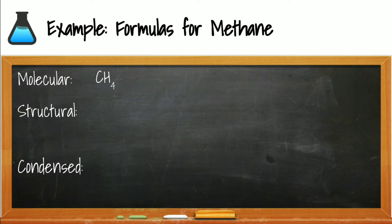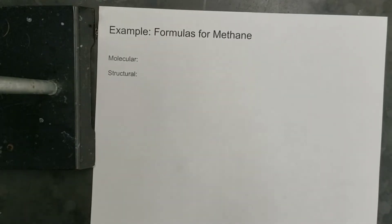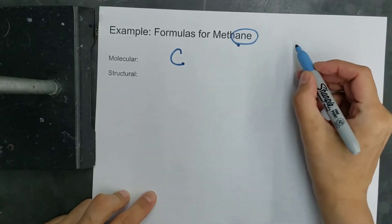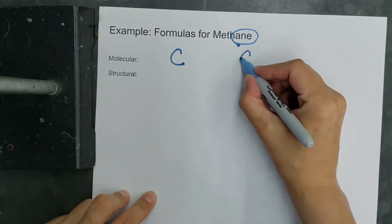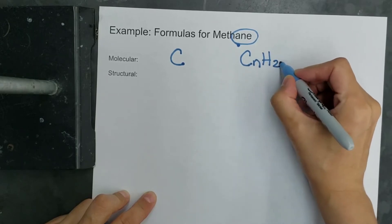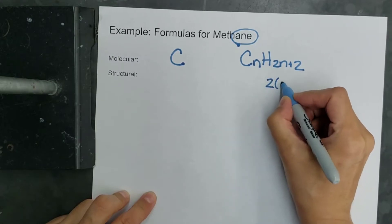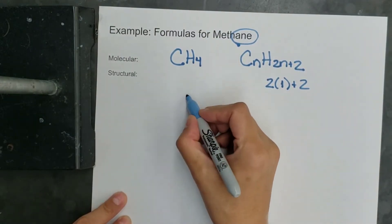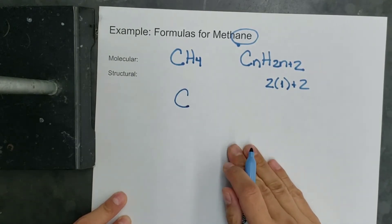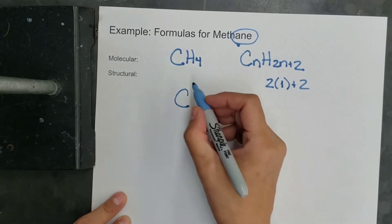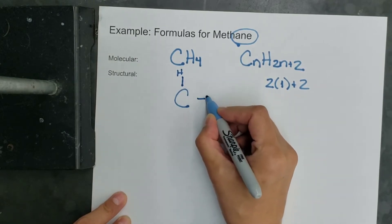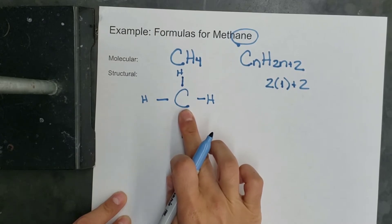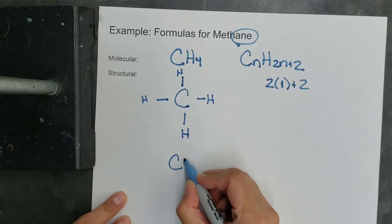Starting with methane: the prefix 'meth' tells us we have one carbon, and the suffix '-ane' indicates an alkane. The general formula from reference table Q for an alkane is CₙH₂ₙ₊₂. With one carbon, we need four hydrogens. We draw the one carbon, attach a hydrogen at each of the four bonds. The condensed formula for methane is simply CH₄.